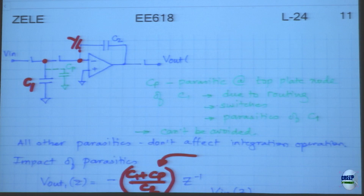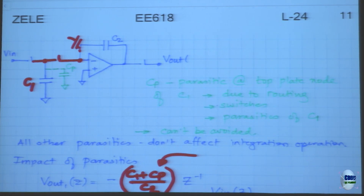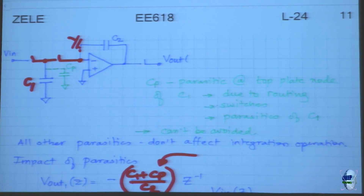The innovation is: if it hurts, don't do that. We're applying input on one side, and that's where the parasitic capacitance matters. The solution is: don't apply VIN on that side — apply analog ground there instead. Then wherever CP is, it won't matter because the parasitic capacitance will always hold analog ground in both cycles. So we put the inputs on the other side.